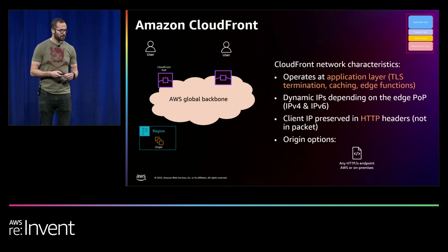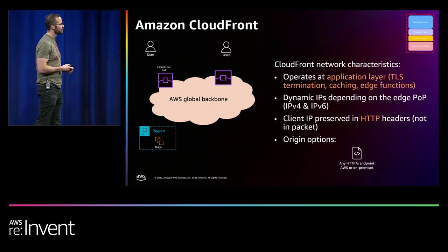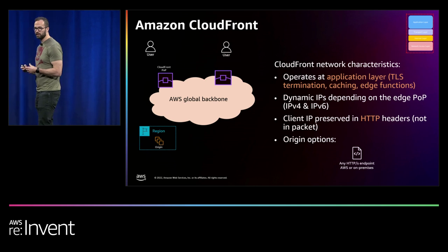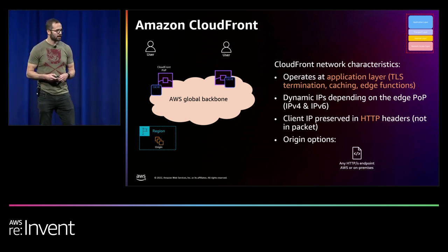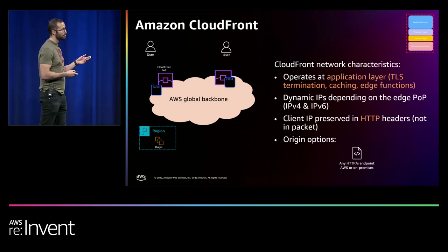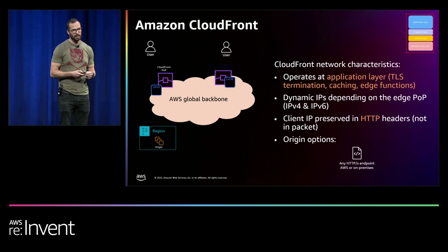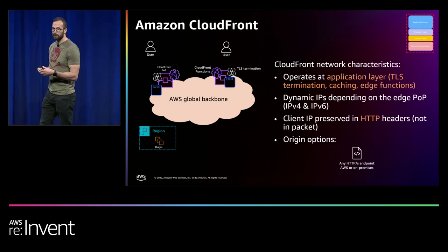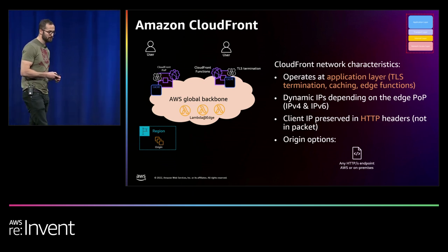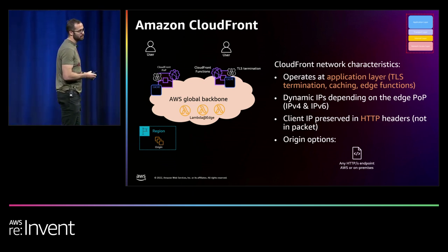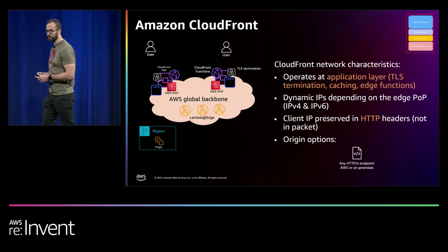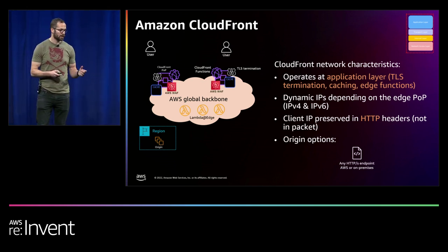CloudFront is a content delivery network focused on optimizing the experience of web applications. It focuses on HTTP and HTTPS, as well as some streaming applications. The functionality it brings is very focused on optimizing experience: it has an edge cache for static content, supports TLS termination at the edge, supports CloudFront Functions so you can run code at the edge location, and supports Lambda@Edge which runs Lambda in the closest region to the incoming edge location. You can also add AWS WAF for additional security.